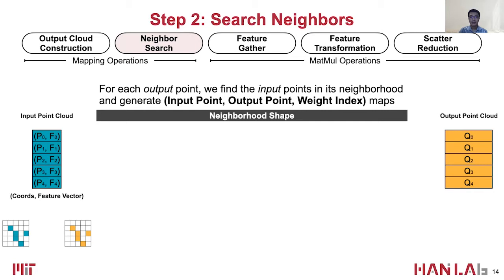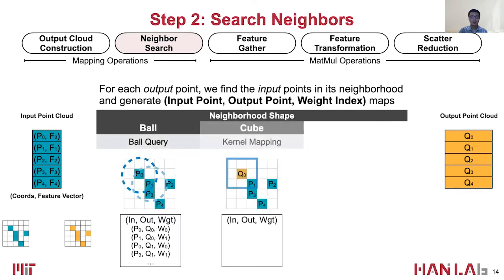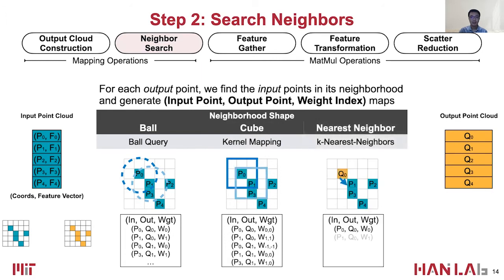The neighborhood in the point cloud convolution is the same as the receptive field in the conventional convolution. The difference is that the neighborhood shape varies depending on the neighbor search algorithms. The most common neighbor search algorithms include ball query, whose neighborhood is in the shape of a ball, kernel mapping whose neighborhood is in the shape of a cube, and k-nearest neighbor. Now we generate a list of input point, output point, and weight index maps for computation.